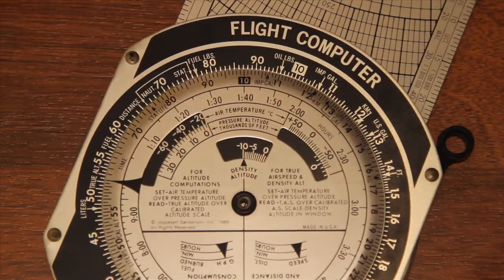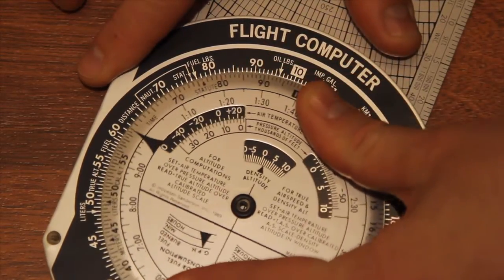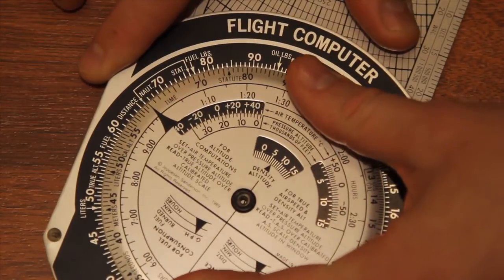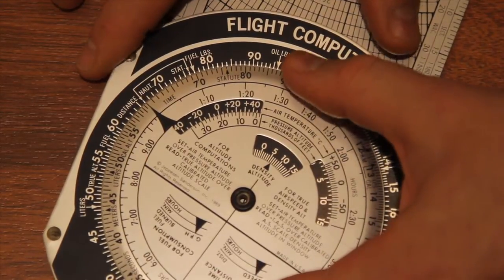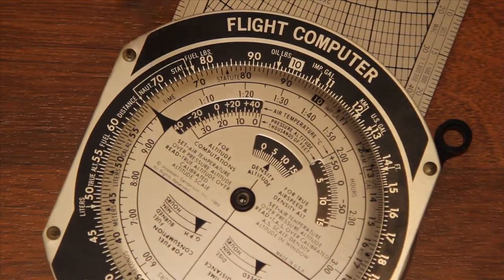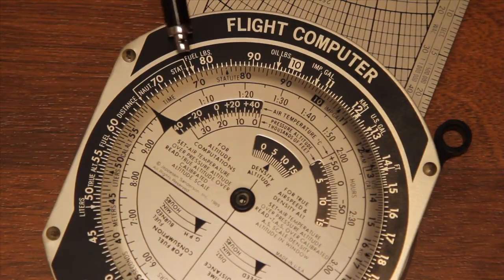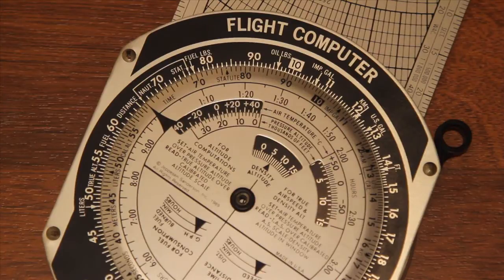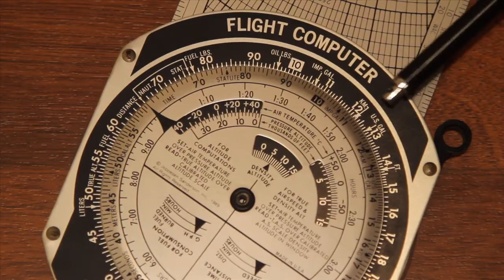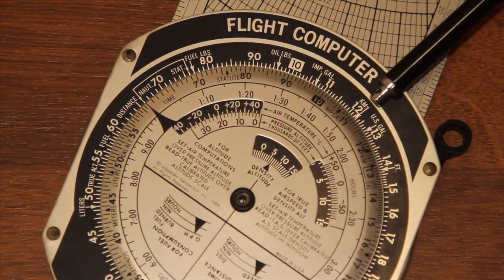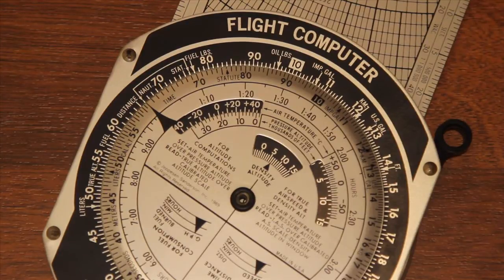Similarly, if you want to put 60 nautical miles in, you bring the 60 mark around to the nautical mile scale over here and then you can read off your statute miles or your kilometres. So statute miles is about 69 statute miles and the reading here in kilometres is about 111 kilometres.